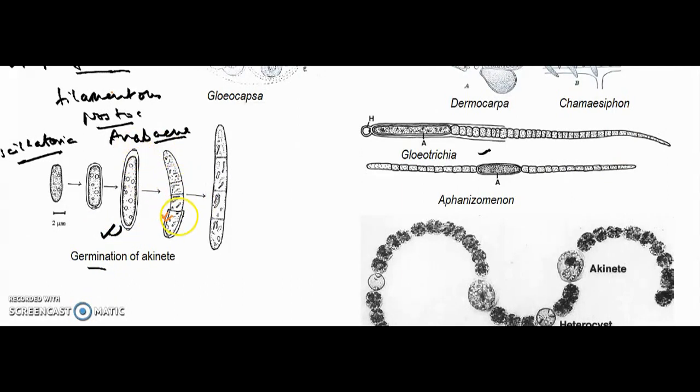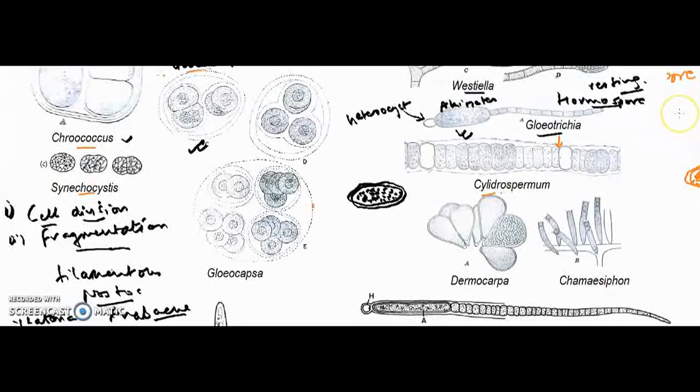The wall ruptures and the cell inside divides transversely, forming a trichome or filament structure as the case may be.